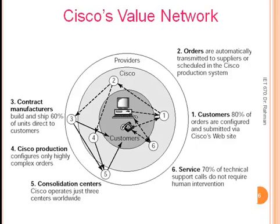Another example is the Cisco system supply chain. In this system, 80% of orders are configured through Cisco's website and then automatically transmitted to suppliers. The supplier is directly integrated into the Cisco system, which contacts manufacturers to build and ship products directly from manufacturer to customers. Only highly complex products are handled by Cisco's own production systems. This allows Cisco to manage with fewer warehouses and less transportation, thereby minimizing their supply chain cost.